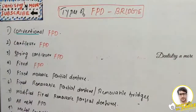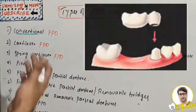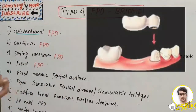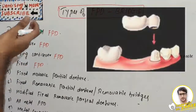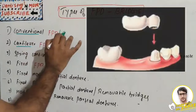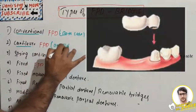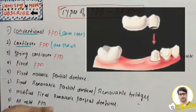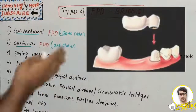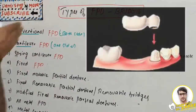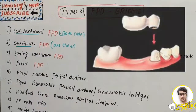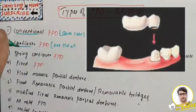Next we have the cantilever FPD. Cantilever FPD is used when support can be obtained only from one side of the edentulous space, compared to conventional which takes support from both sides. These have compromised support because the pontic is supported from only one side, so there is a high chance of dislodgement.